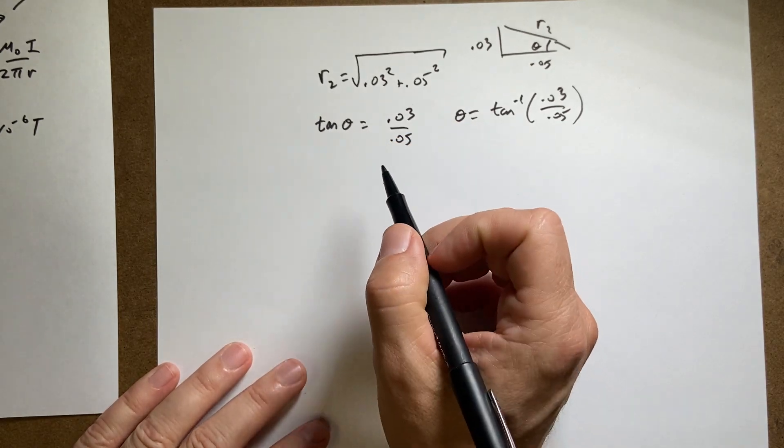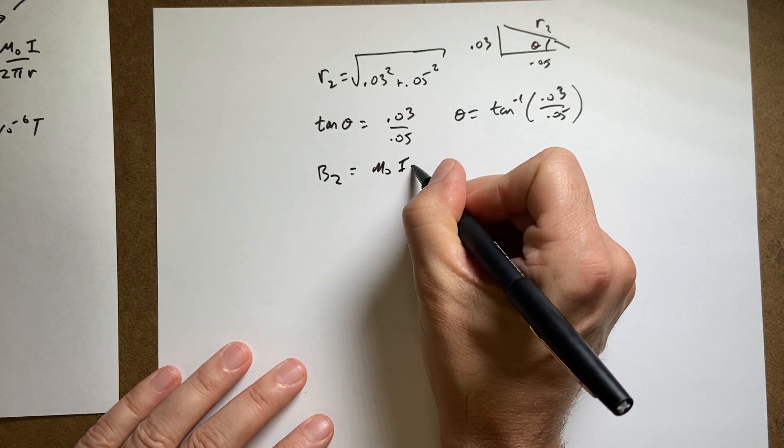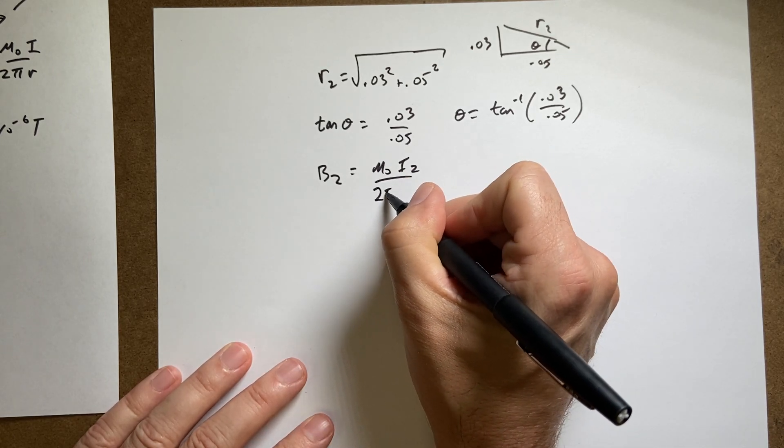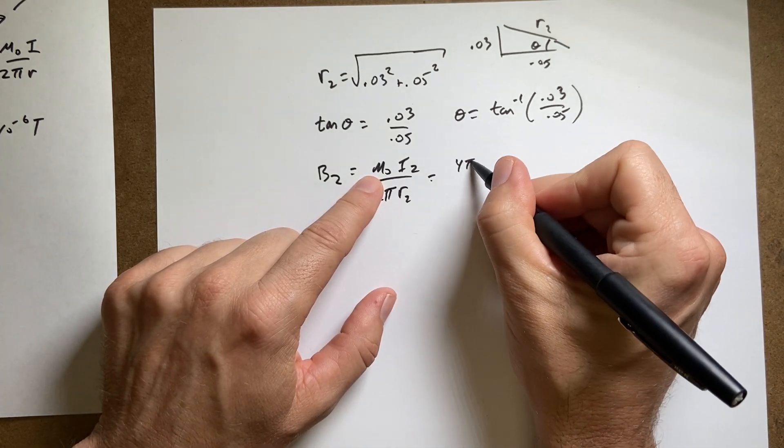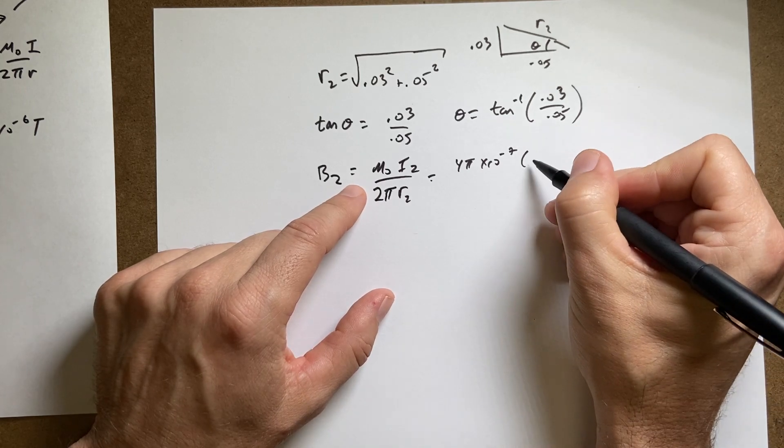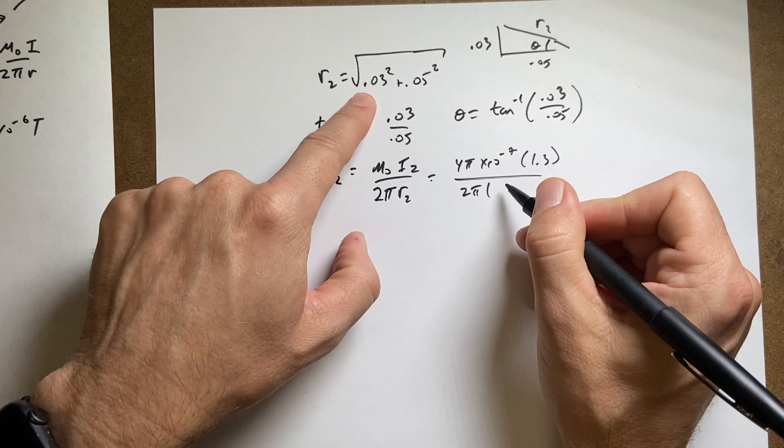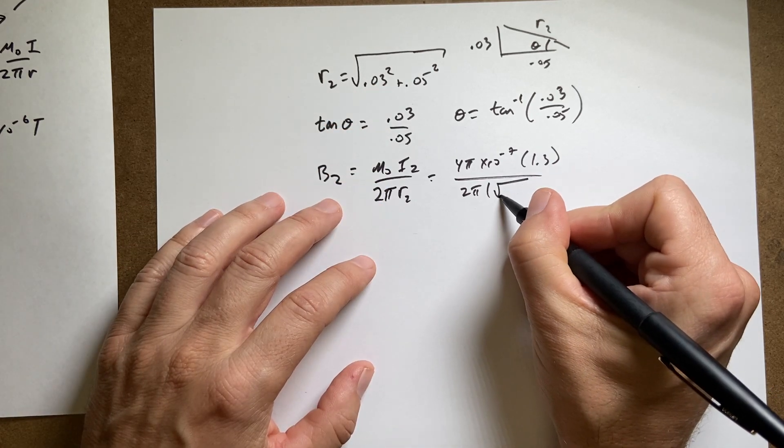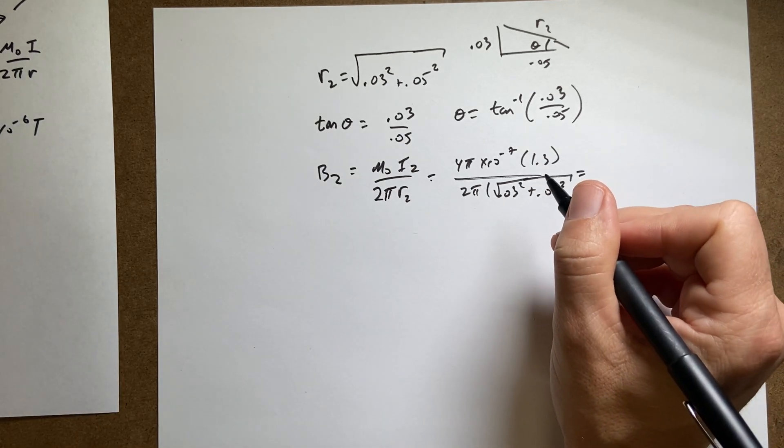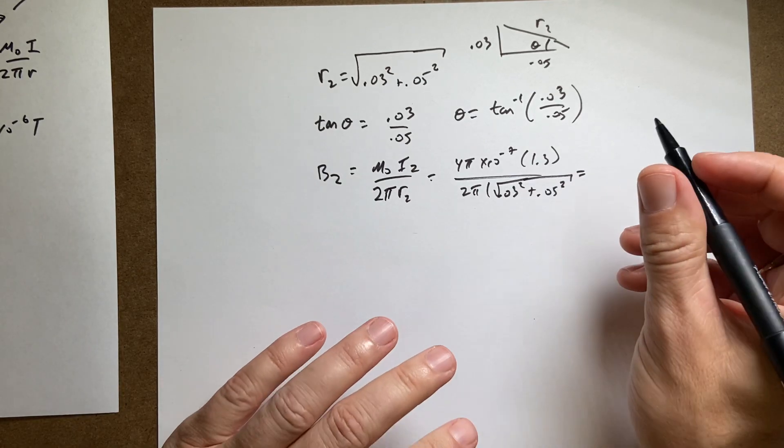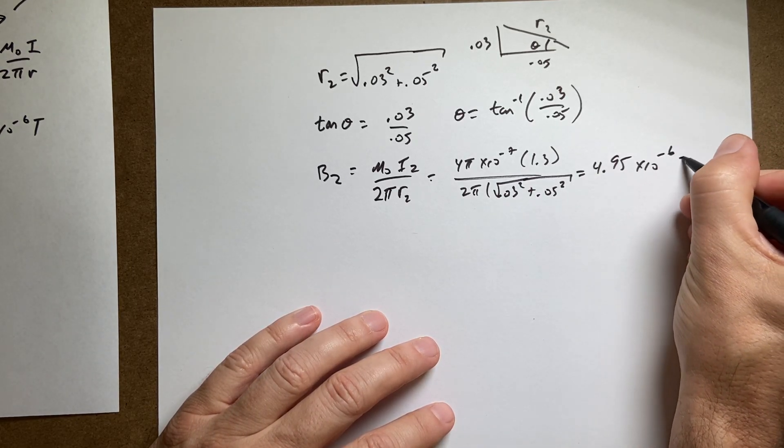Now I know r₂, so I can calculate the magnitude B₂. B₂ is going to be μ₀I₂/(2πr₂). That's equal to 4π × 10⁻⁷ × 1.3 amps over 2π times the square root of 0.03² + 0.05². I get 4.95 × 10⁻⁶ Tesla.